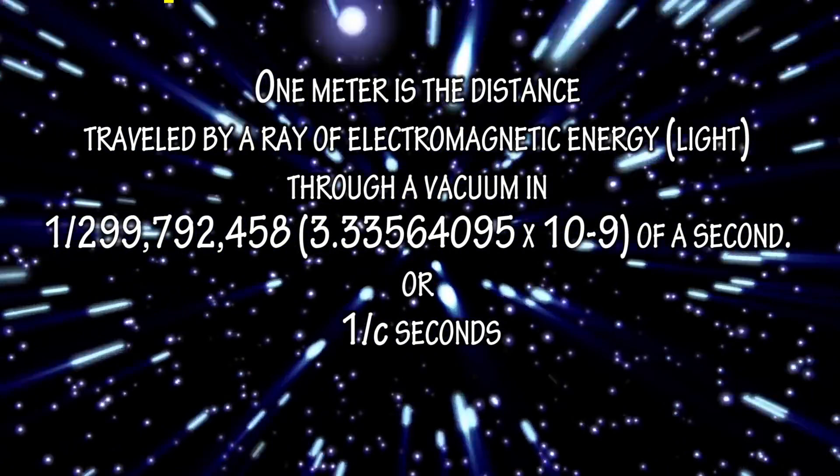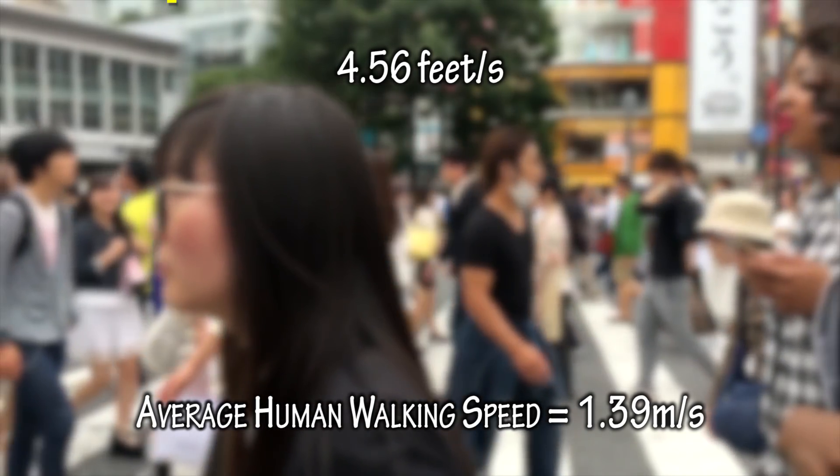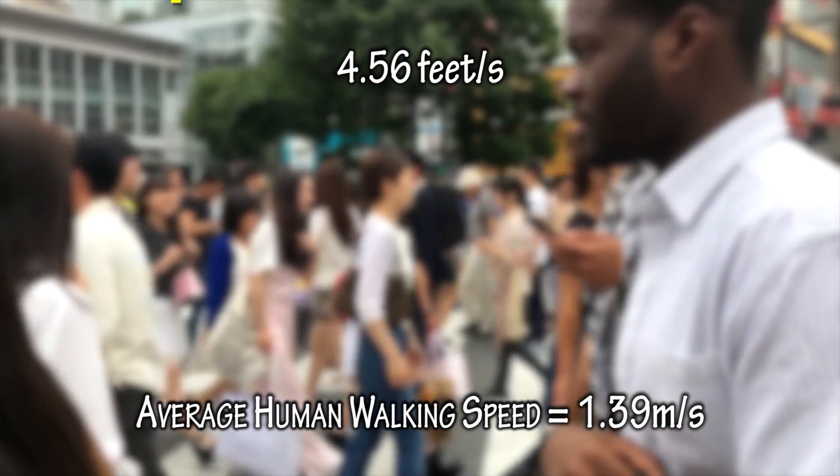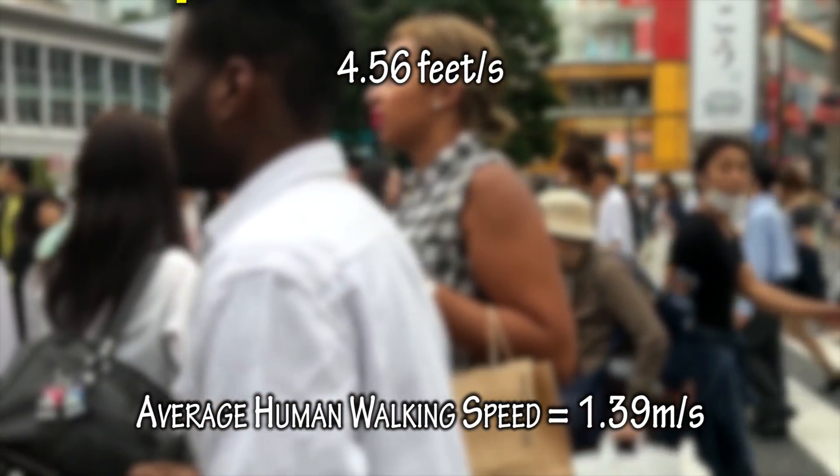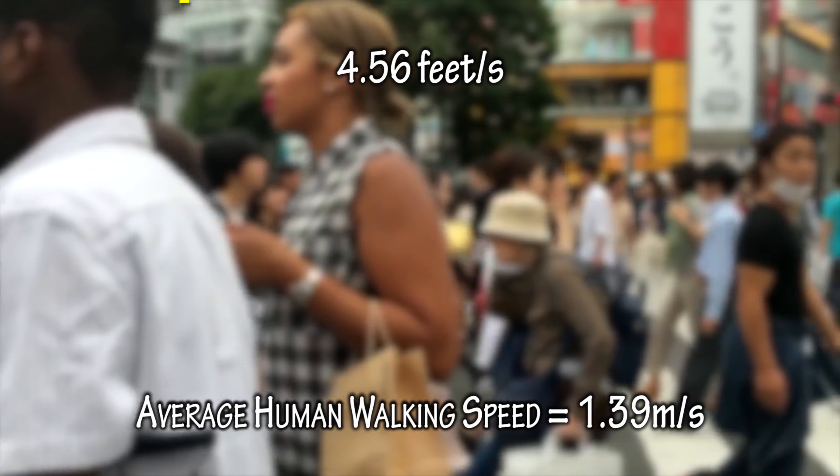Let's start with something familiar. A human person is said to walk, on average, 1.39 meters per second. That's quick enough to get you to the bathroom from anywhere in your house in under 20 seconds.